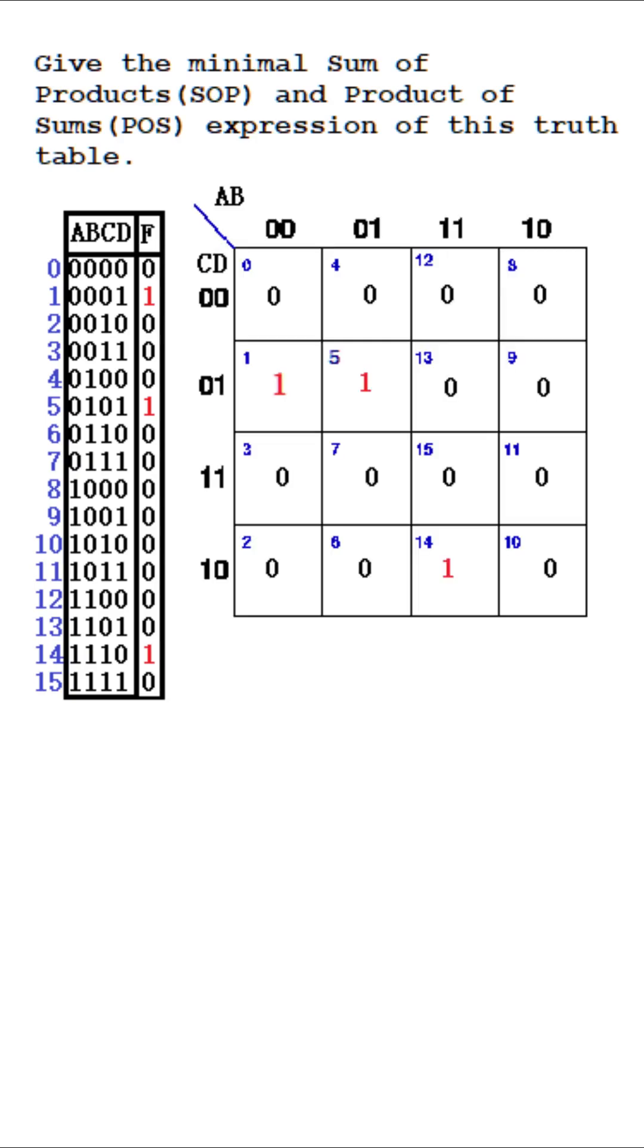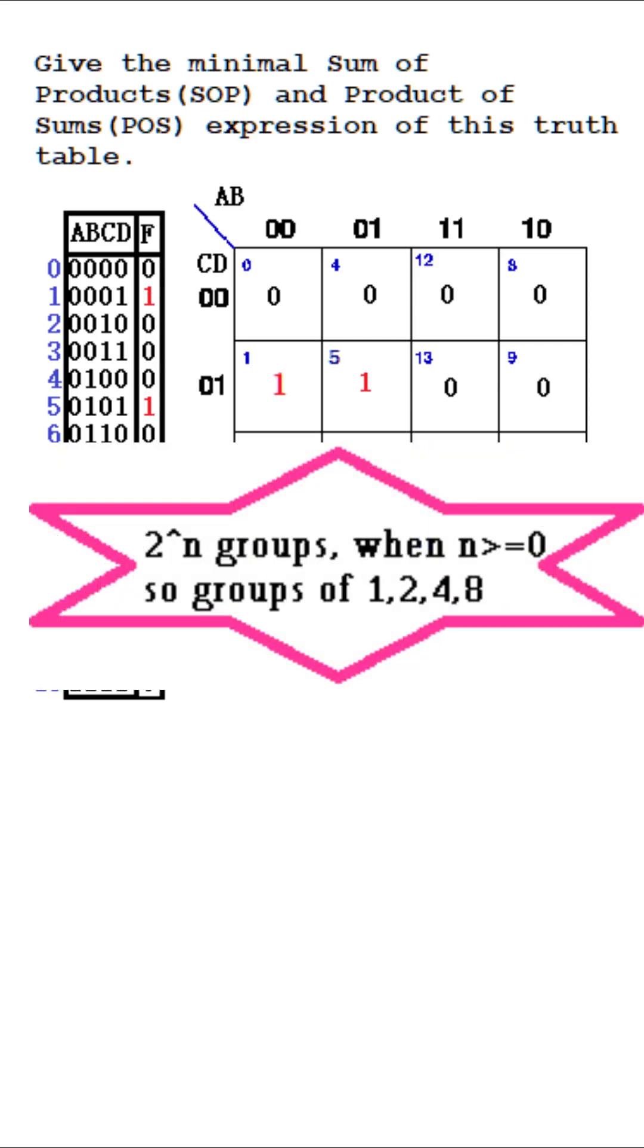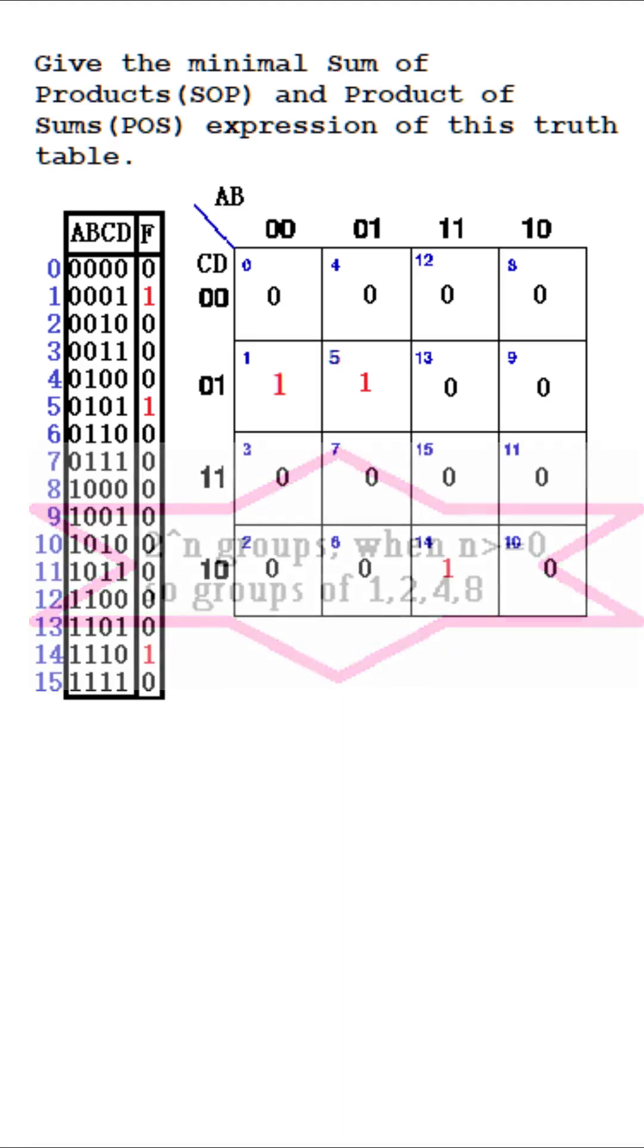We then create clusters of minterms and maxterms, group them in numbers of 2 to the power of n, also grouping them in a way to minimize the number of groups.